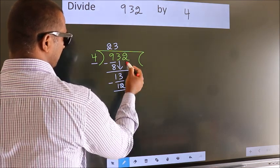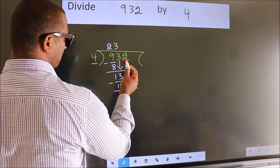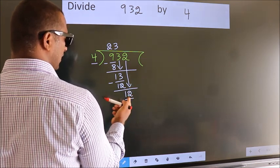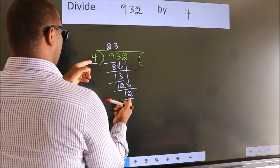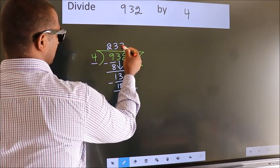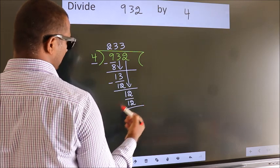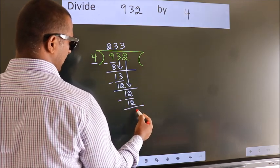After this, bring down the beside number. So 2 down. So 12. When do we get 12? In 4 table. 4 threes, 12. Now we subtract. We get 0.